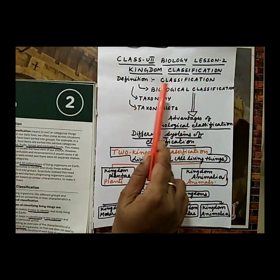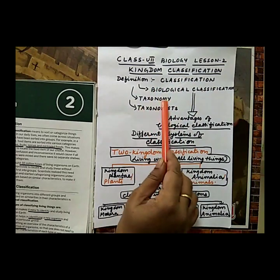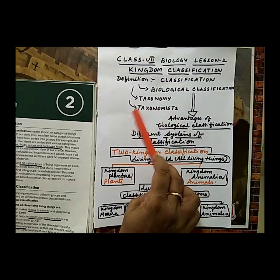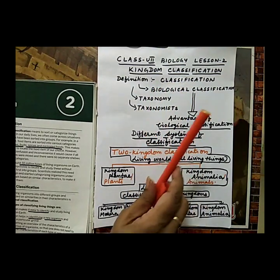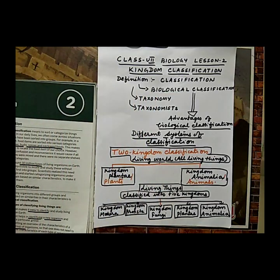The key terms we will define are: classification, biological classification, taxonomy, and taxonomist. Number one — classification means to sort or categorize things into groups.